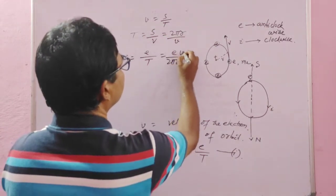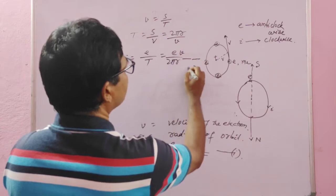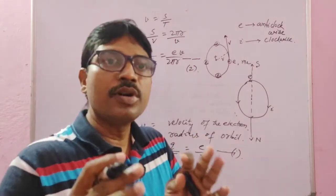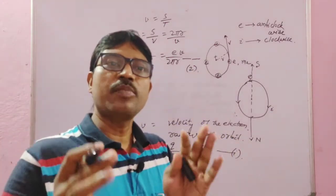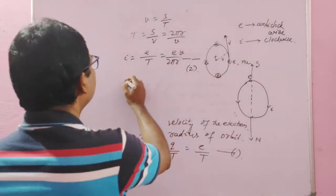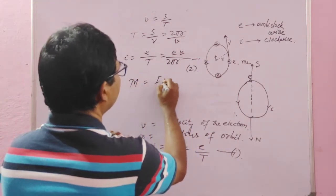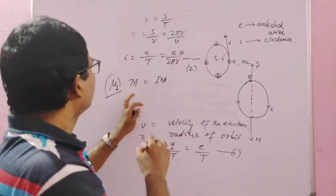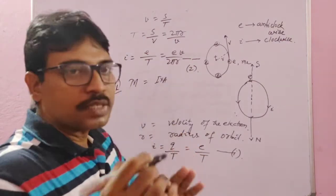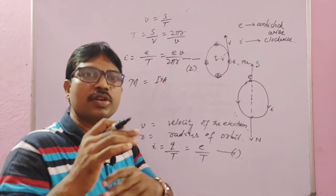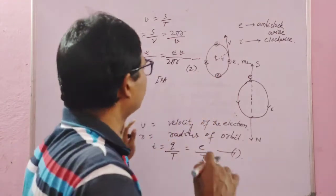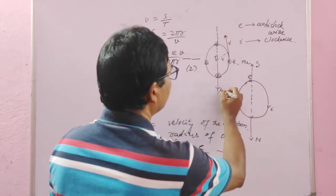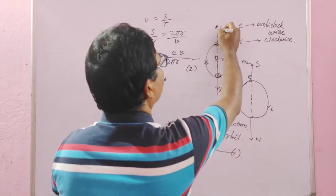So I = ev/2πr. This is equation 2. Now, Bohr magneton means magnetic dipole moment. The magnetic moment is written as M = I × A, or in some books as μL. When the electron revolves in a circular loop orbit, it gives a magnetic moment μL, where L is the angular momentum vector.